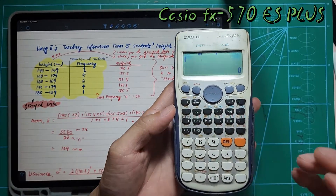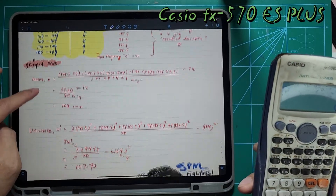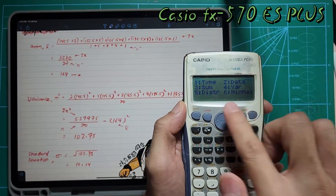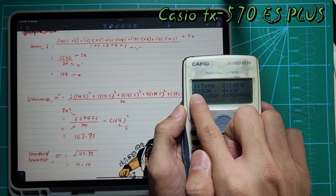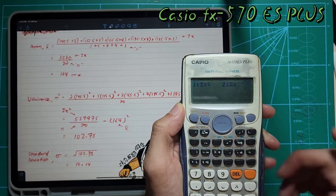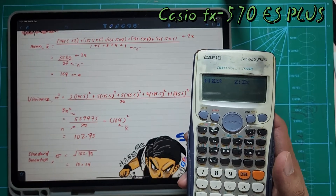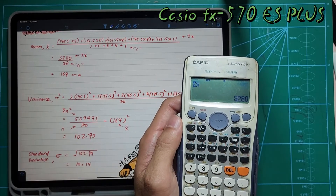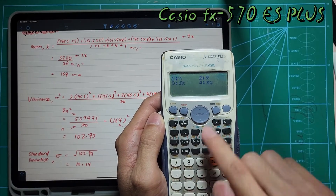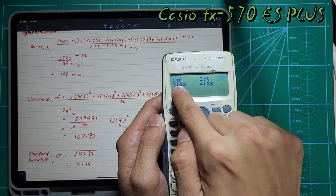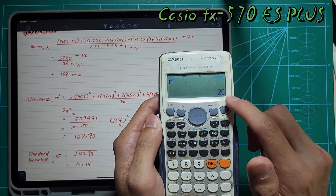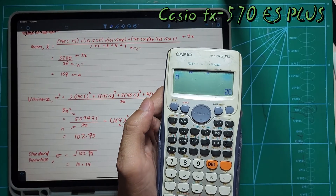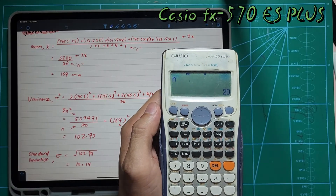Now we're going to get all the info we need. Press Shift 1 — you'll see numbers 3 and 4 which we'll use. Trigger number 3 first — you'll see the x-bar symbol which represents the mean. Press number 2 then equal, and you get the same answer of 164. For n, press Shift 1 then go to number 4 for variance — you'll see n there. Press number 1 and equal, you get 20. Using the calculator prevents typing errors that would ruin your answer.